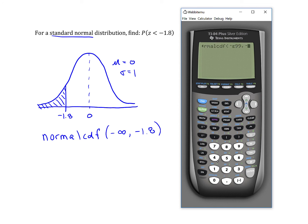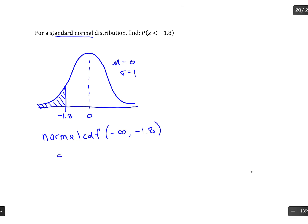Then I put negative 1.8 for my upper bound and I get 0.0359.